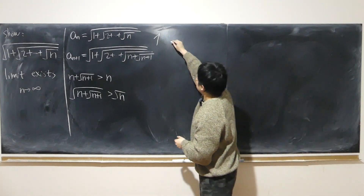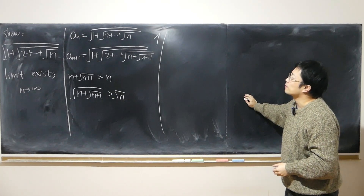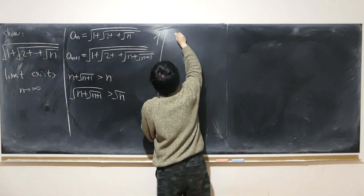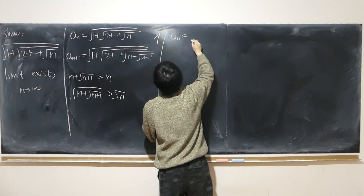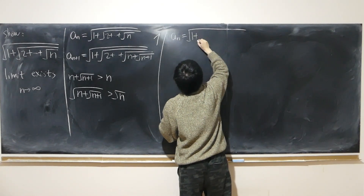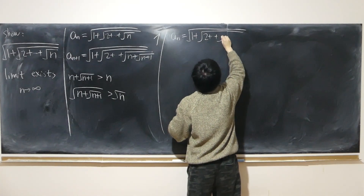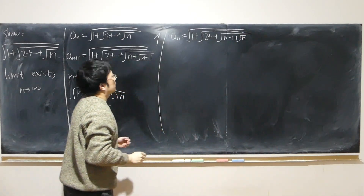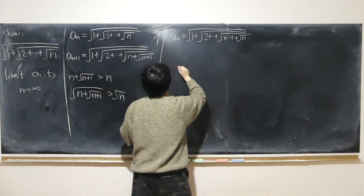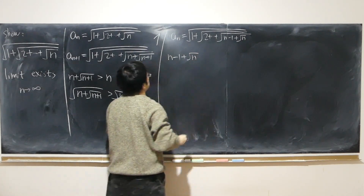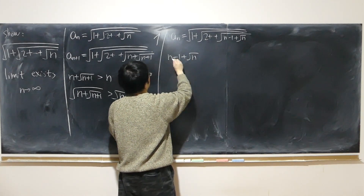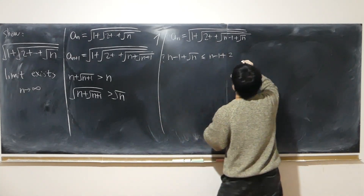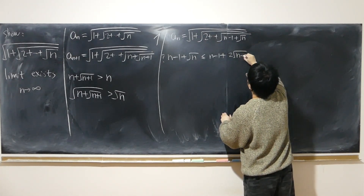Next we prove that the sequence is bounded above by 2, no matter how large n is. Writing the sequence in more detail: 1 plus square root of 2 plus square root of n-1 plus n. I look at the piece n-1 plus square root of n and claim it is less than or equal to n-1 plus 2 times square root of n-1 plus 1.